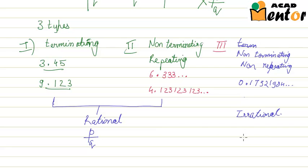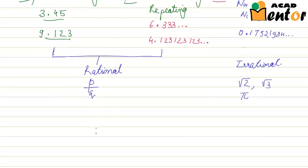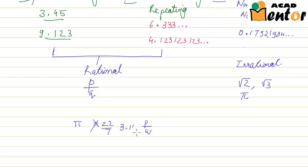Examples of irrational numbers would be root 2, root 3, or pi. You might wonder that we sometimes take pi equal to 22 by 7, which is of the form p by q. But you must remember that this is just an approximation — the exact value of pi is not 22 by 7. We only use pi equal to 22 by 7 or 3.14 for simplicity. Pi is actually an irrational number and is a non-terminating, non-repeating decimal.